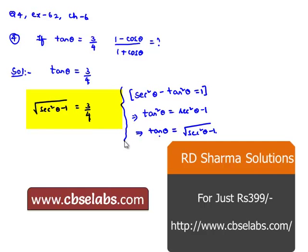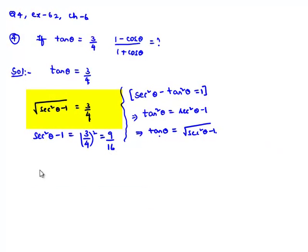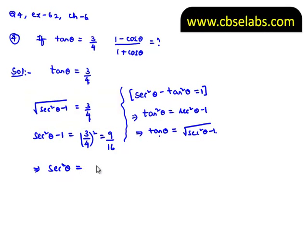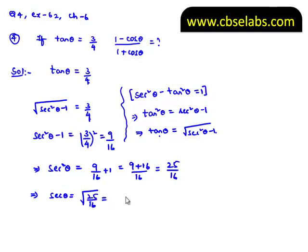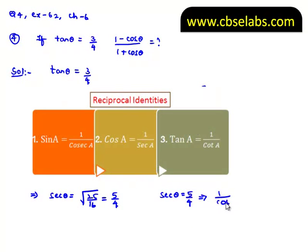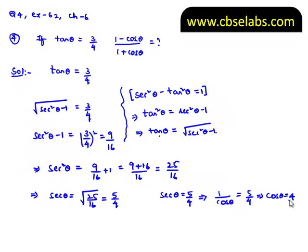Squaring both sides, we get sec²θ minus 1 equals (3 by 4)² which is 9 by 16. This implies sec²θ equals 9 by 16 plus 1, which equals 25 by 16. Therefore sec θ equals the square root of 25 by 16, which is 5 by 4. Since sec θ equals 1 by cos θ, we get cos θ equals 4 by 5.